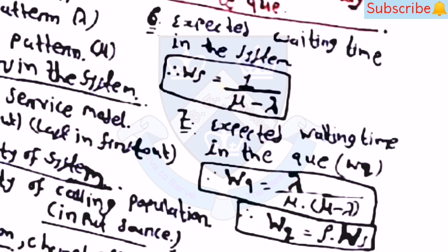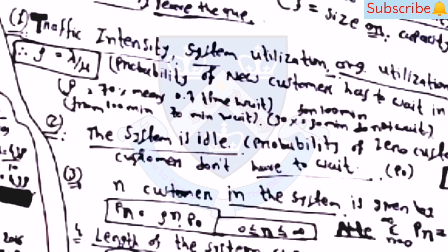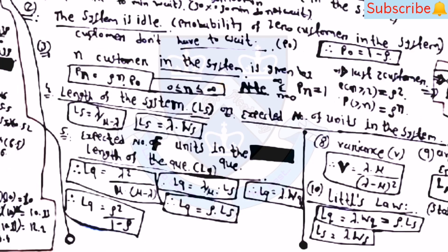Expected waiting time in the system: Ws = 1 / (μ − λ). Expected waiting time in the queue: Wq = λ / [μ(μ − λ)], and Wq = ρ · Ws. Traffic intensity (also called system utilization, channel efficiency, or clearing ratio): ρ = λ/μ. If ρ = 70%, then 70% of the time is waiting time.